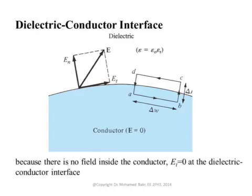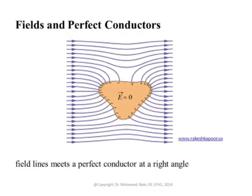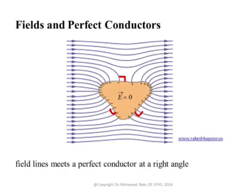For a perfect conductor there is no tangential field — only a normal electric field. For a good conductor this will be approximately satisfied, with a very tiny tangential component, but most of the field will indeed be normal. To illustrate, when we place a piece of perfect conductor inside an electric field, the charges align themselves on the surface — positive charges on one side, negative on the other — and the field lines all terminate normal to the boundary.